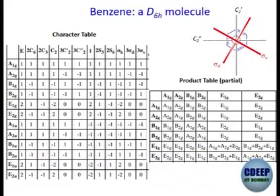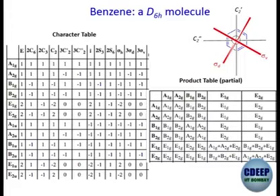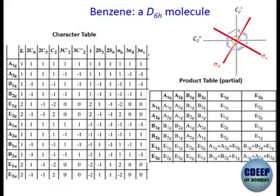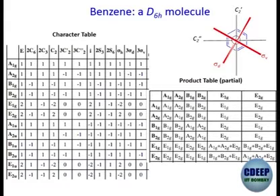E and C6 — the C6 axis is perpendicular to the benzene ring through the center. There are two C6 entries because one is clockwise and the other anticlockwise. C3 is C6 squared, and C2 is C6 cubed. We don't write 2C2 for the principal C2 because clockwise and anticlockwise give the same configuration.